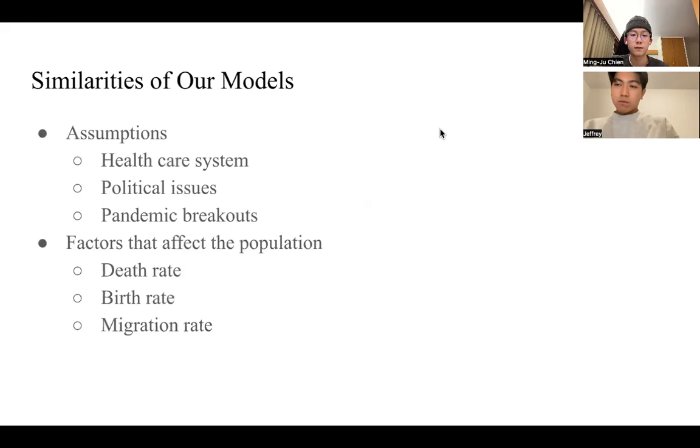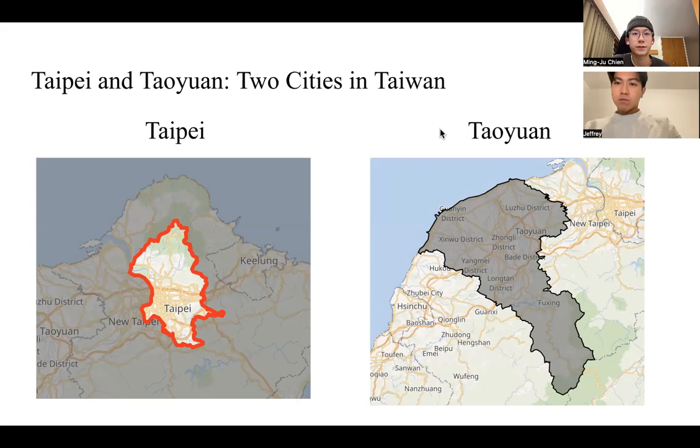Jeffrey's hometown Taoyuan and my hometown Taipei are both in Taiwan, with a large difference in total population. We are able to predict the population based on our model considering several factors.